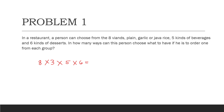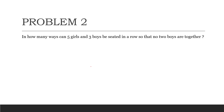Problem 2: In how many ways can five girls and three boys be seated in a row so that no two boys are together? Let us first arrange the girls.